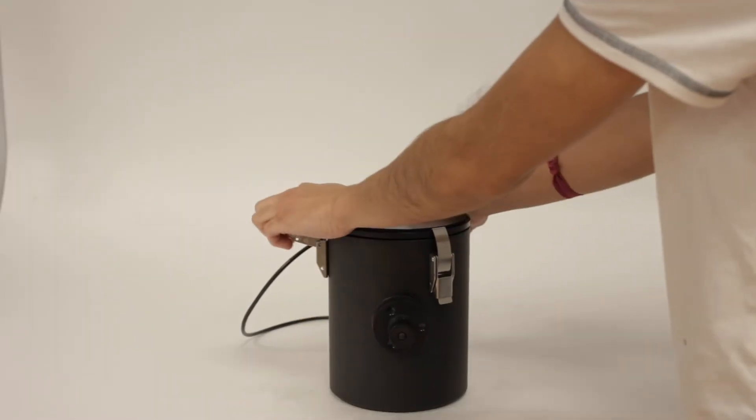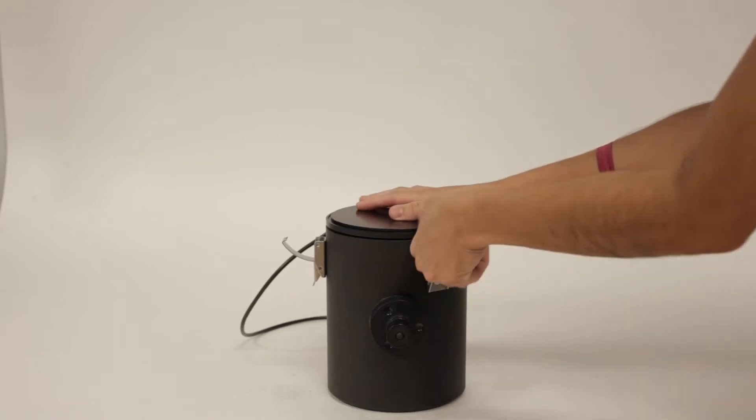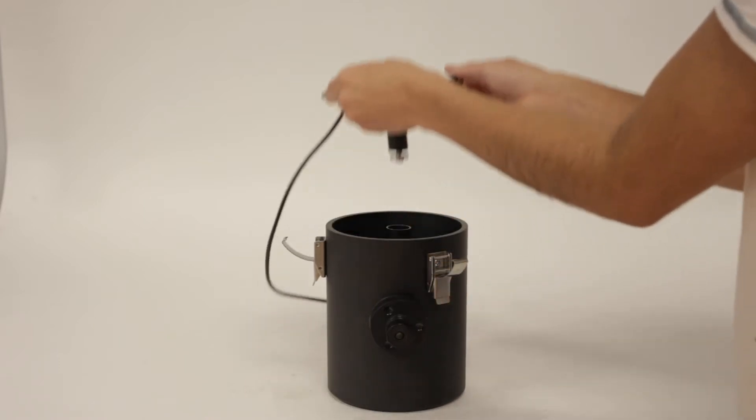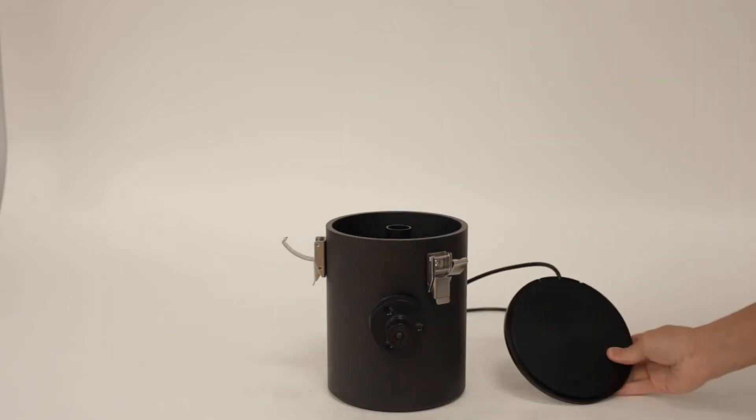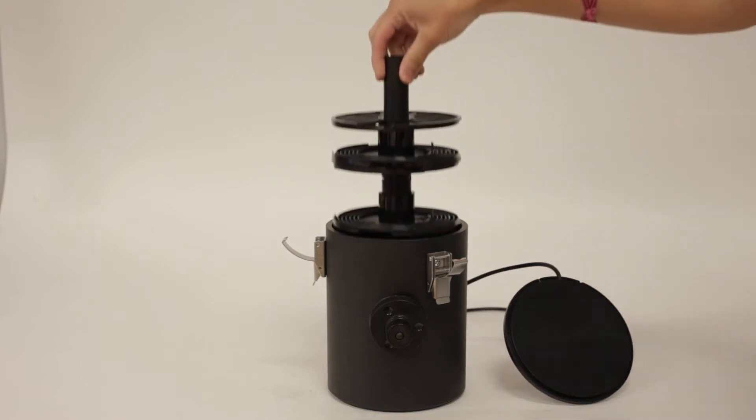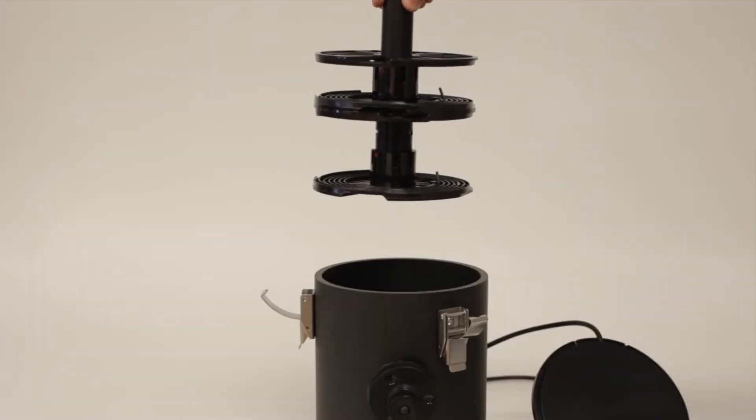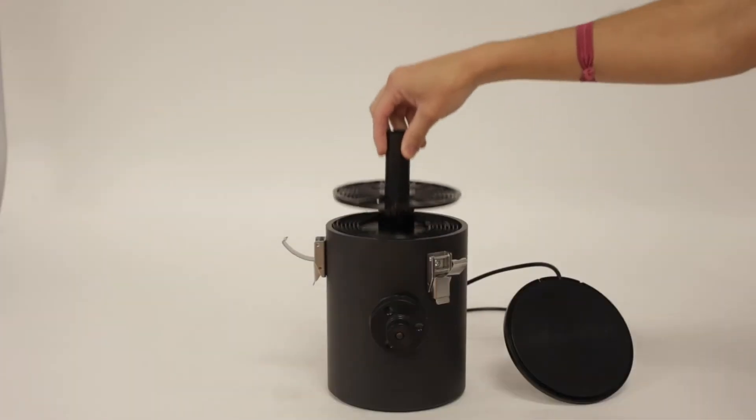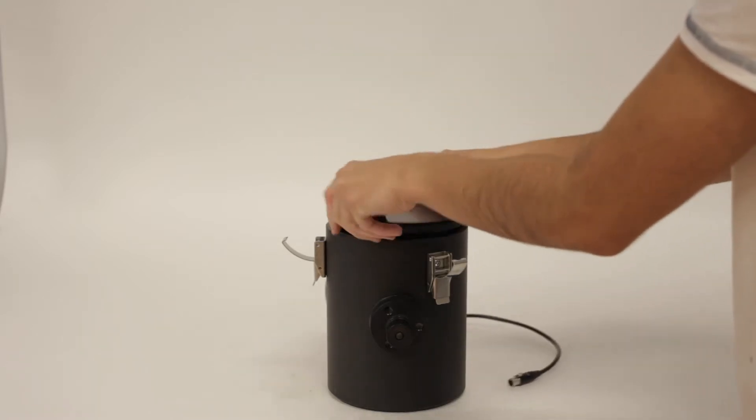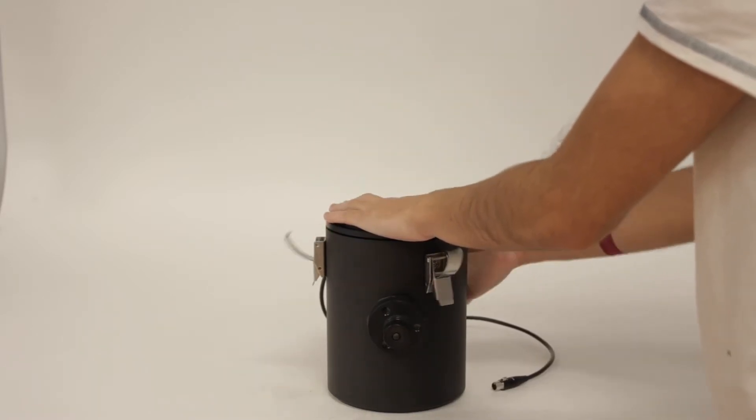The film tank can handle up to 4 rolls of 35mm or 120, and up to 12 sheets of 4x5 sheet film. The reels can be configured in numerous ways to develop various formats simultaneously. So if you had a roll of 35mm but also had some 4x5, it's possible to develop both at the same time.